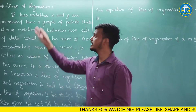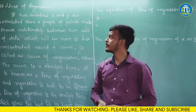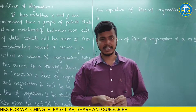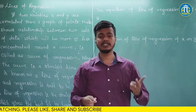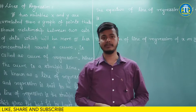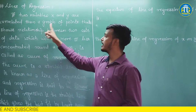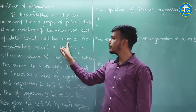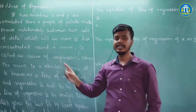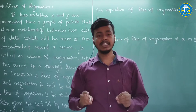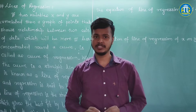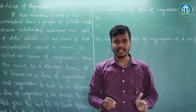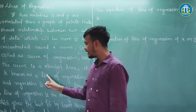Let us see what lines of regression is. If there are two variables x and y and they are correlated — and we have already seen that if two variables are correlated, there exists a relationship between them — then a graph of points which shows the relationship between the two sets of data, which would be more or less concentrated around a curve, is said to be a curve of regression. In particular, if the curve is a straight line, then it is called a line of regression.